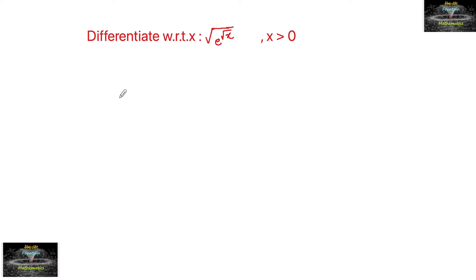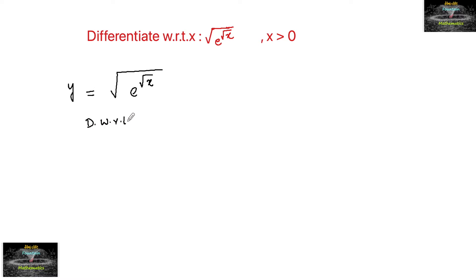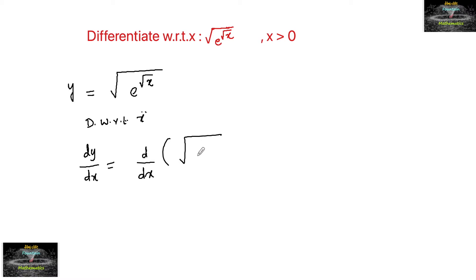Differentiate with respect to x: 2x times square root of e to the power of root x. So let's take y equal to that expression, and we need to find dy by dx, which equals d by dx of root over e to the power of root x.